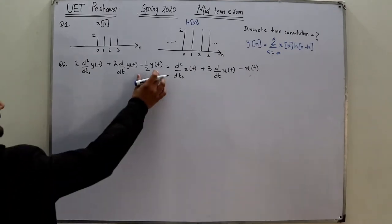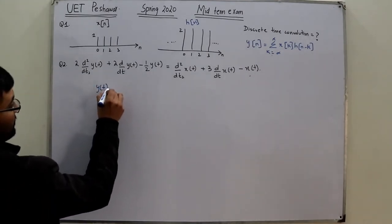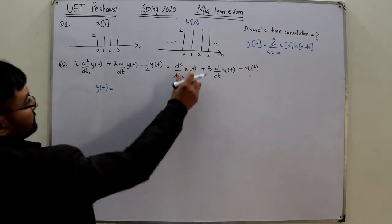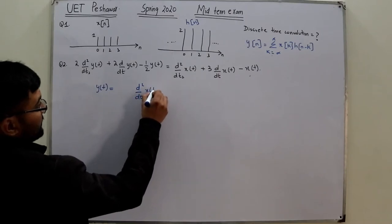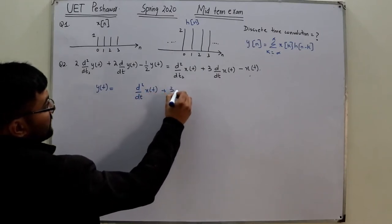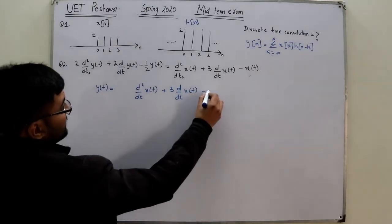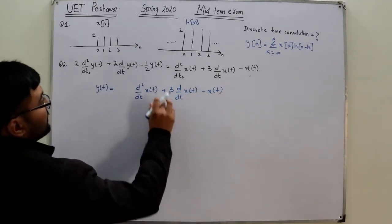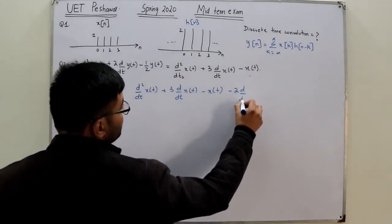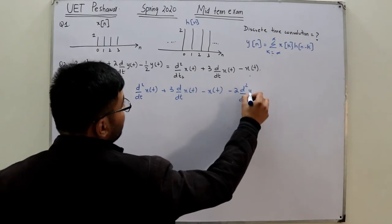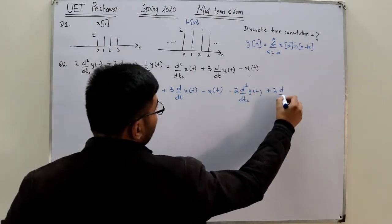The first step is to equate the equation in terms of y of t. So y of t would be the second derivative of x of t plus three times the first derivative of x of t minus x of t, and now these would come to this side: you have a minus two times the second derivative of y of t and plus two times the first derivative of y of t.